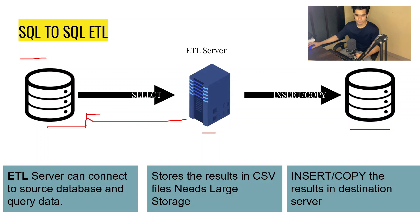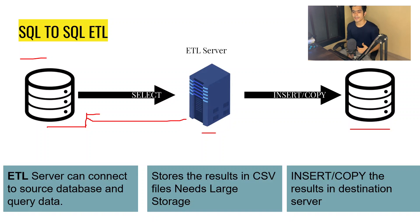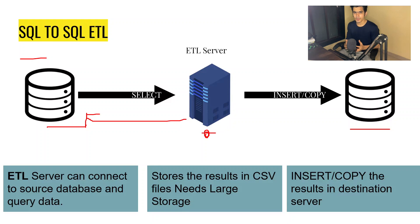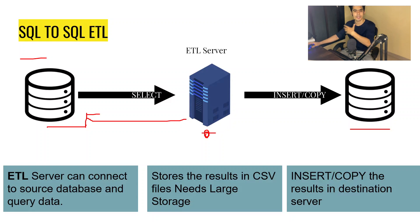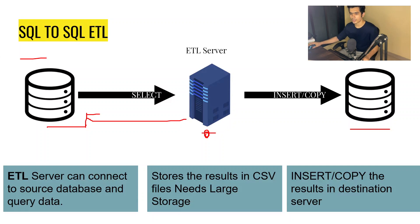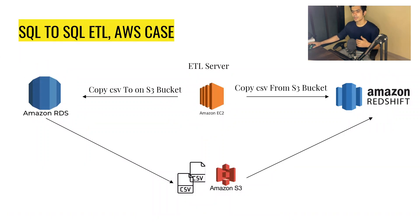The ETL server connects to the relational database and runs a query — let's say SELECT * FROM the table name — to fetch all the data. It then stores that data onto the ETL server, which is generally called a staging server, where you store your data to be processed further. Then we insert or copy the data into the destination server. This is what a SQL-to-SQL ETL looks like.